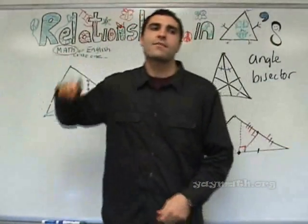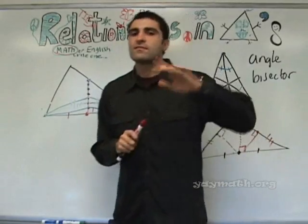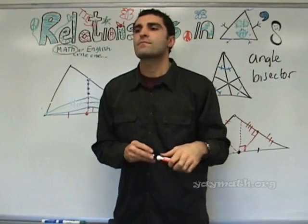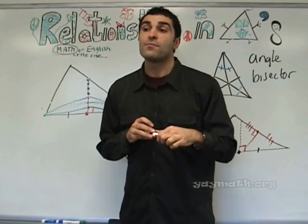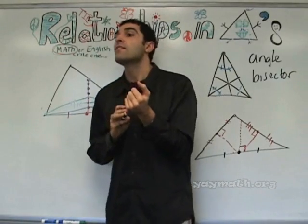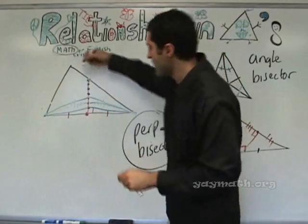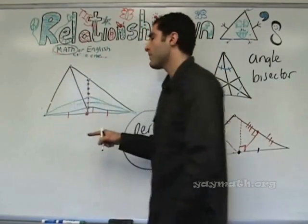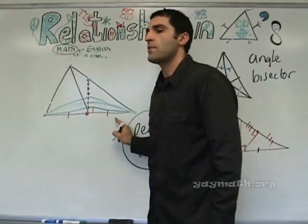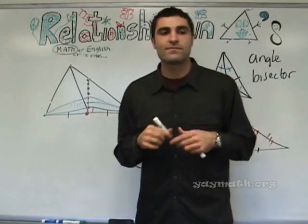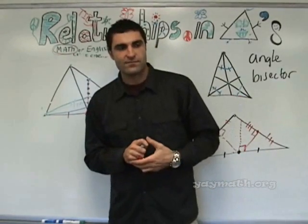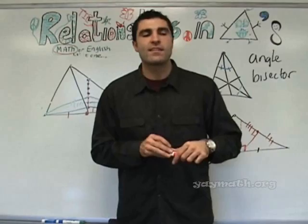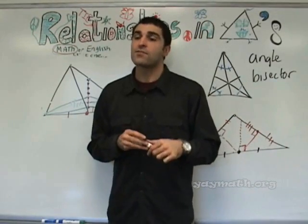Lightning round. Who can say what a median is in their own words? It splits the line that it touches into two congruent parts — goes from a vertex and splits the opposite side into two equal parts. These triangles aren't necessarily congruent. What is an altitude? It starts at a vertex and forms right angles with the opposite side — it's also the height.